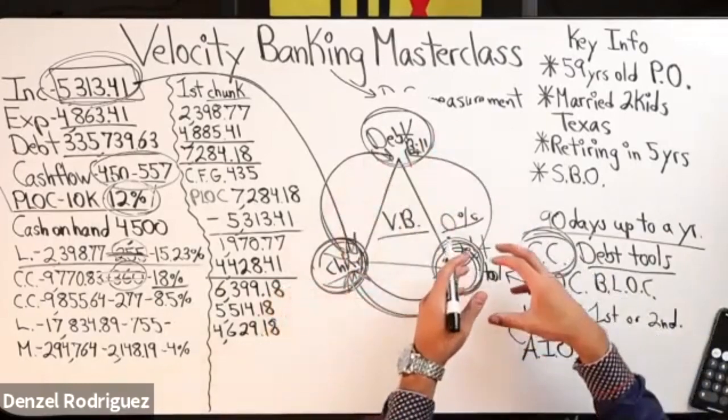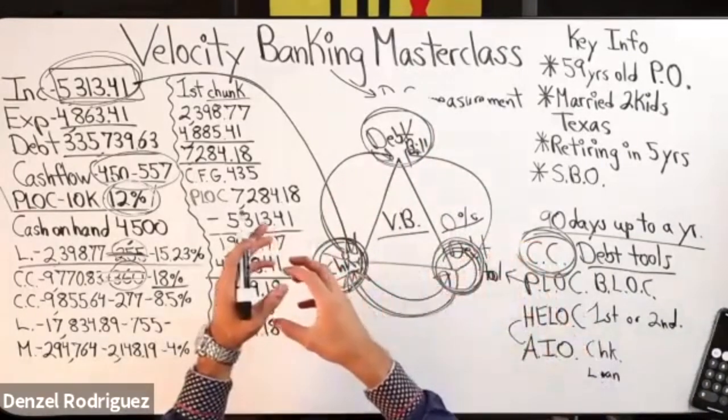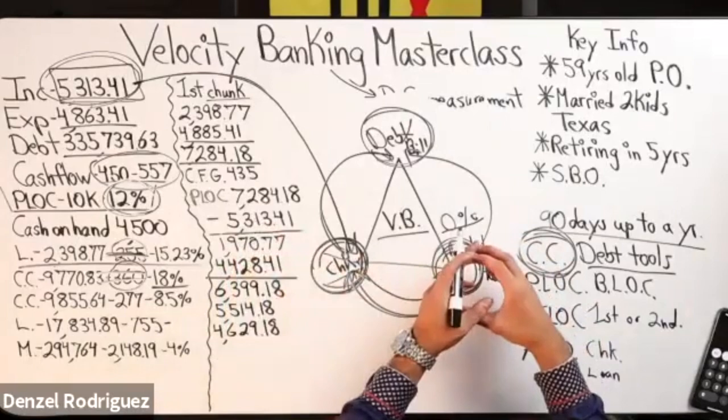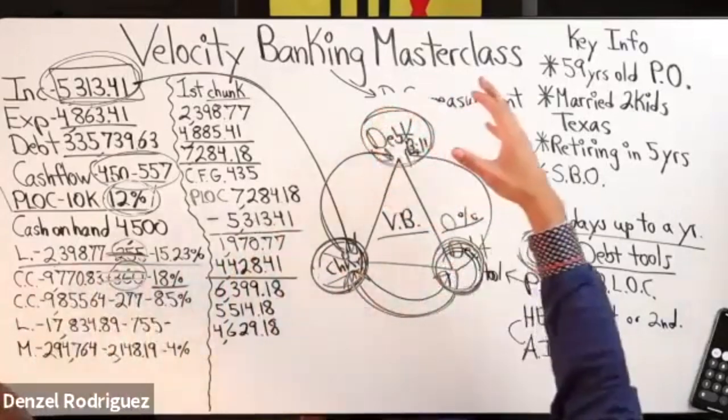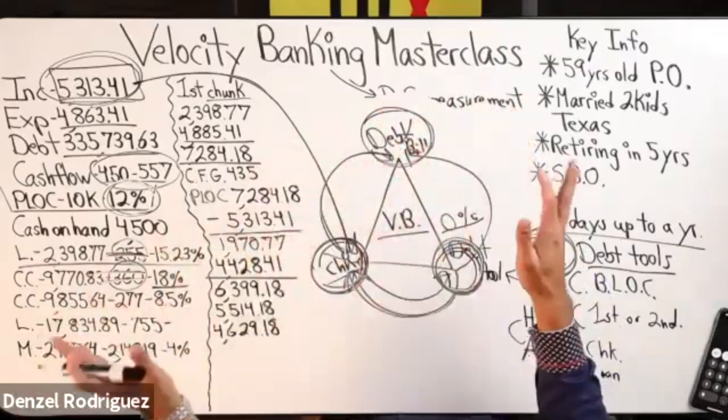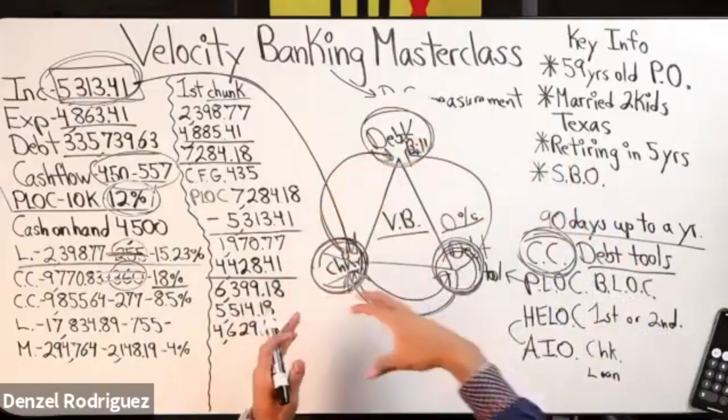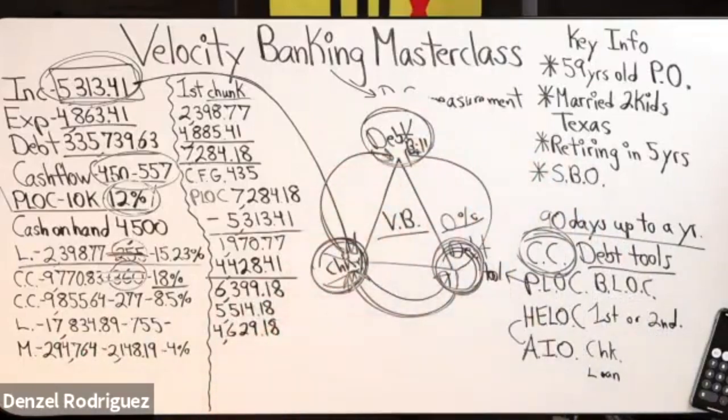So money comes out, money goes in, expenses come out, cash flow stays. You continue to pay your bills the same exact way you're paying it before doing the concept. Nothing changes over there, it's just where your money is going. The money, your money, has to stay in rotation.